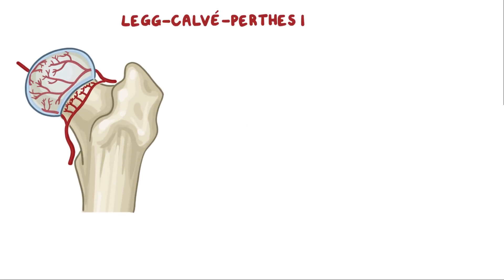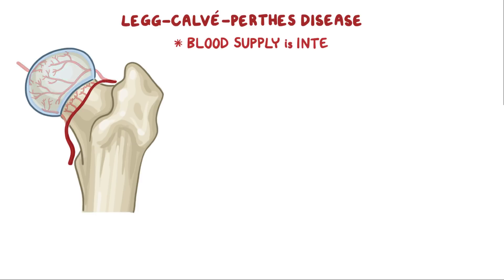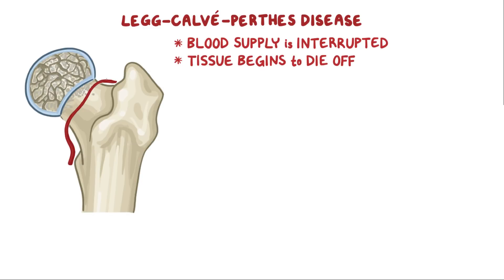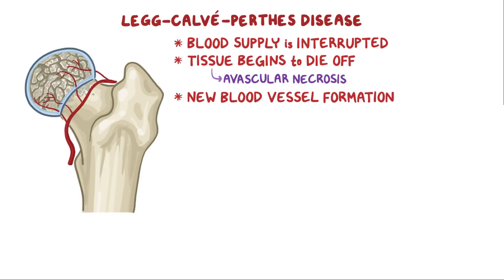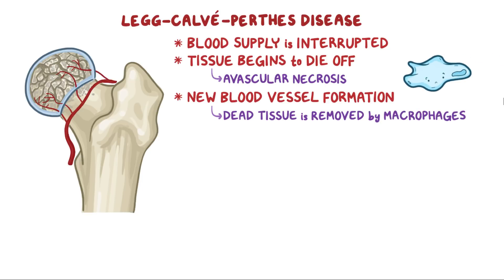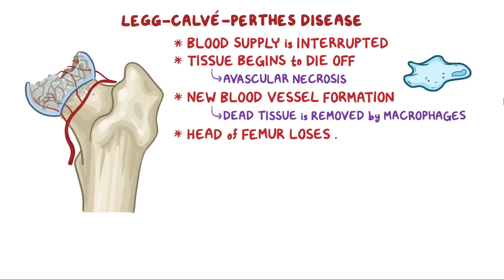In Legg-Calvé-Perthes disease, for some children, the blood supply to the femoral head becomes interrupted for some reason, and it's not known why exactly. The result is that the tissue begins to die off, a process called avascular necrosis. Over time, there's new blood vessel formation into the necrotized bone that allows the dead tissue to get removed by immune cells called macrophages. That process causes the head of the femur to lose mass, leaving it weak and prone to fractures.